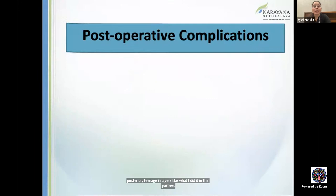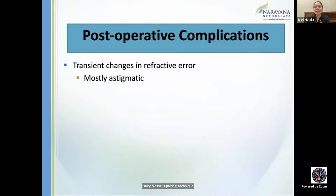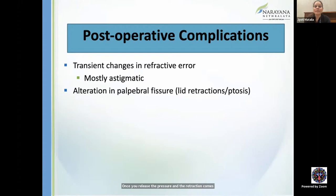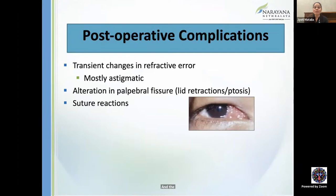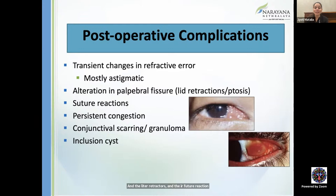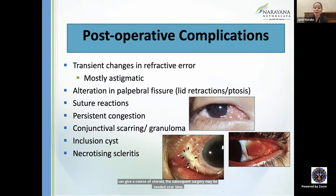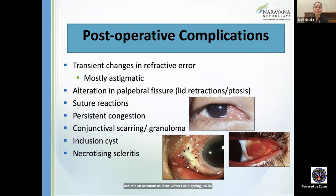Other complications include transient refractive changes and astigmatism (seen with DRS when globe retraction is released), alteration in palpebral fissure — lid retraction and ptosis — common when operating on superior and inferior rectus (break all adhesions with LPS for SR and lid retractors for IR). Suture reactions, persistent congestion, conjunctival scarring, granuloma, inclusion cysts may require a course of steroids or subsequent surgery. Necrotizing scleritis is an emergency to rule out — differentiate from a simple wound gap; take help from cornea colleagues if in doubt. Postoperative infections should also be monitored.